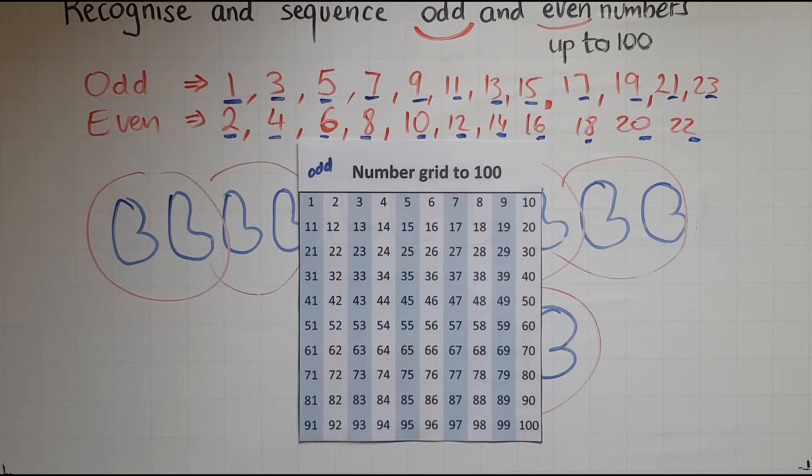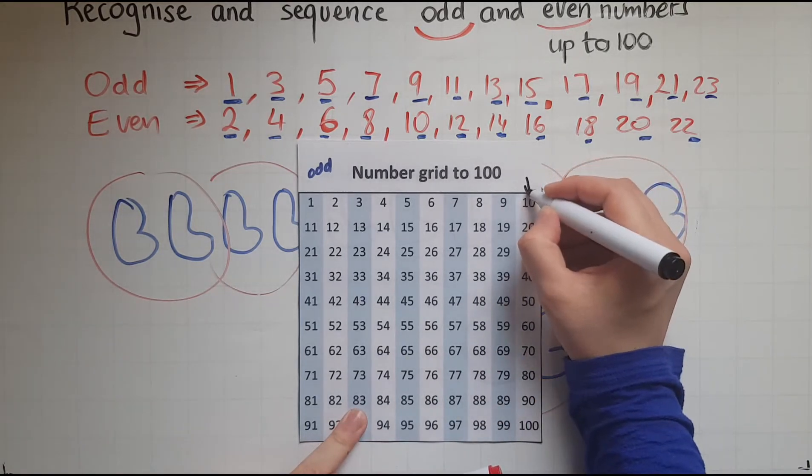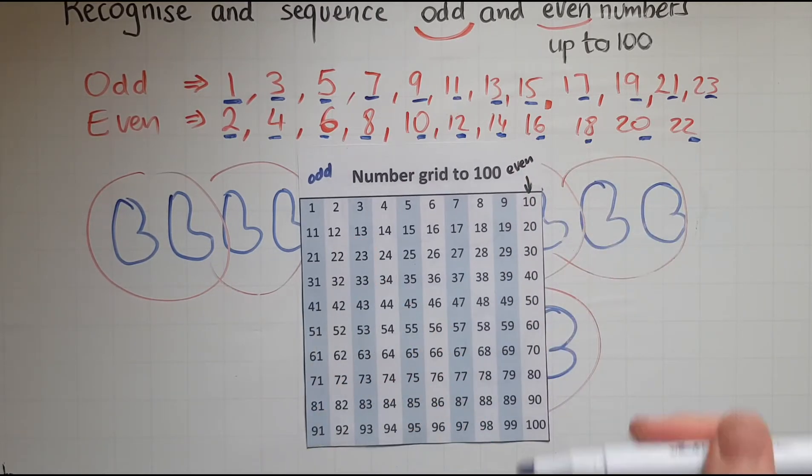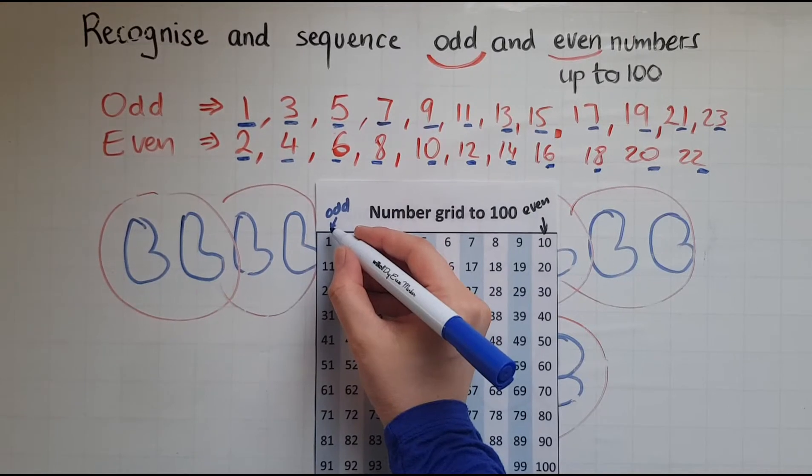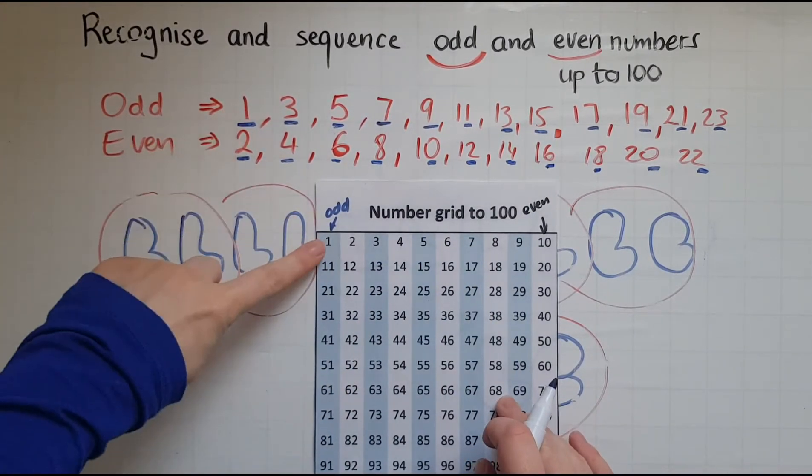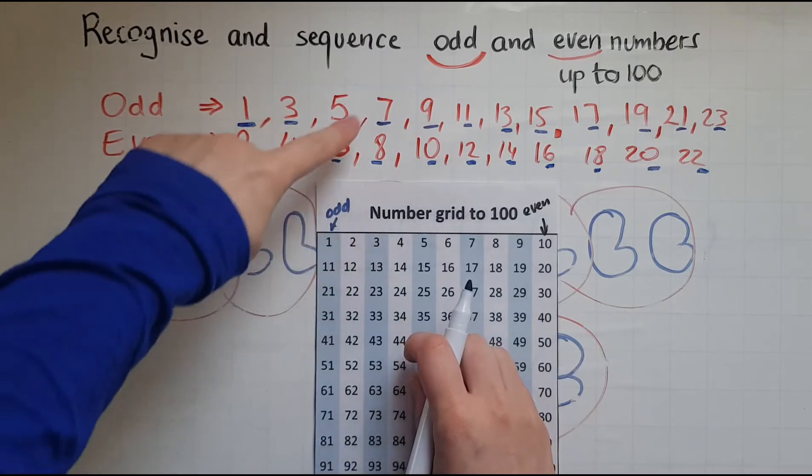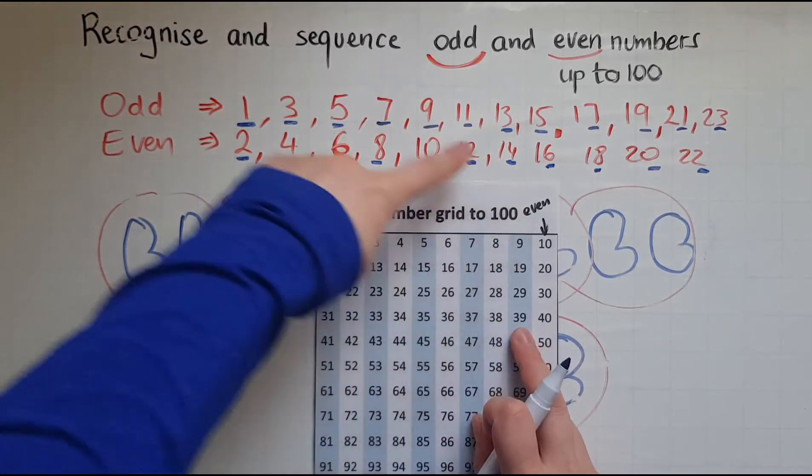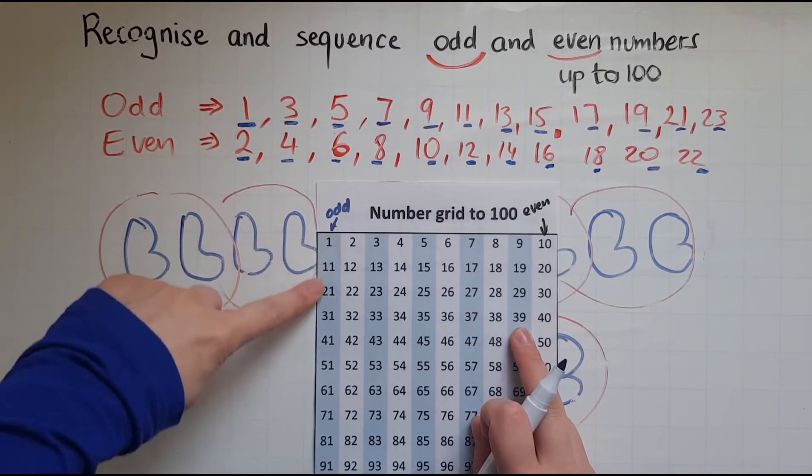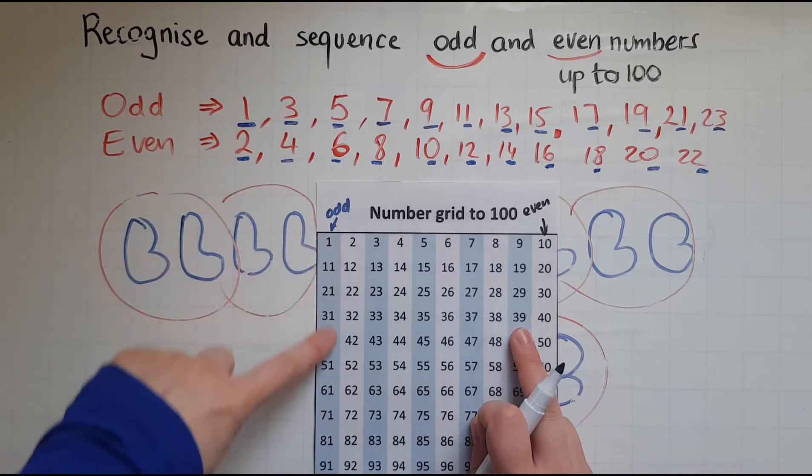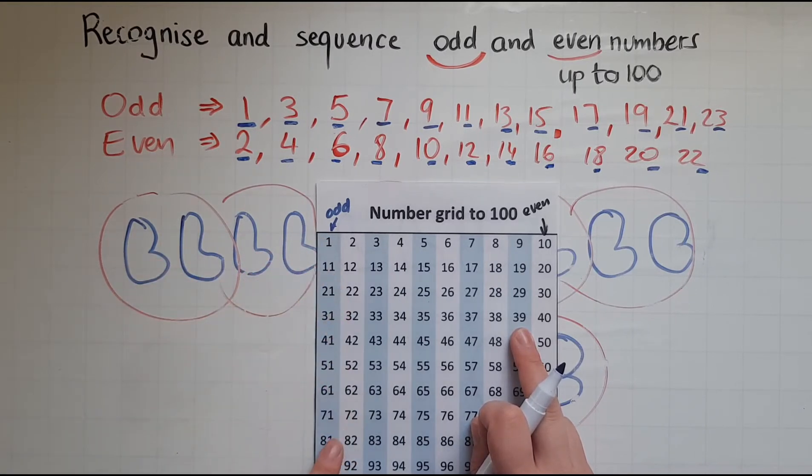Whereas the white ones are even. So all these numbers that we saw here, 1, 3, 5, 7, 9, that we have 11. So in this column, we've got numbers ending in 1 or that the units are 1. They are odd.